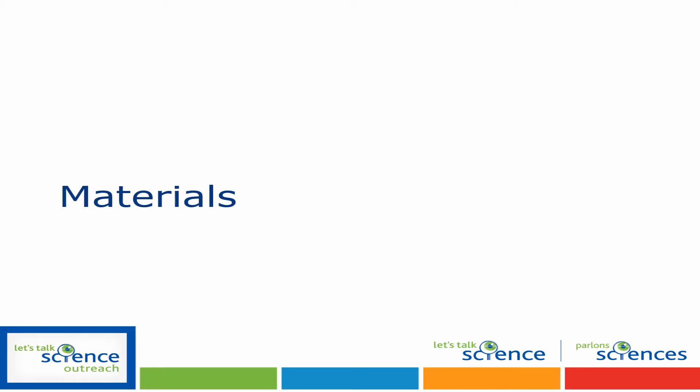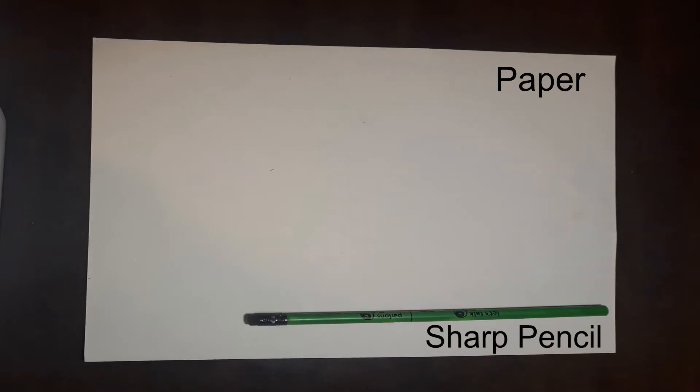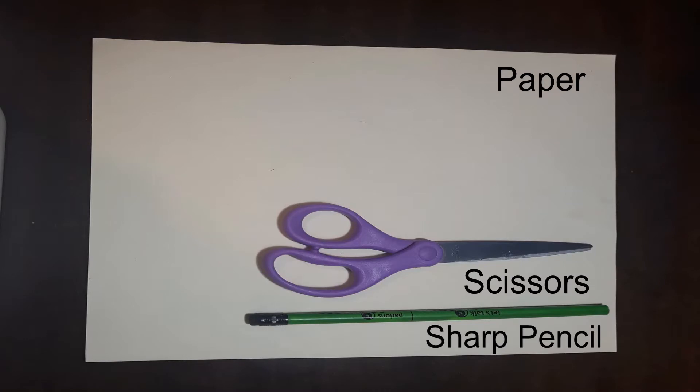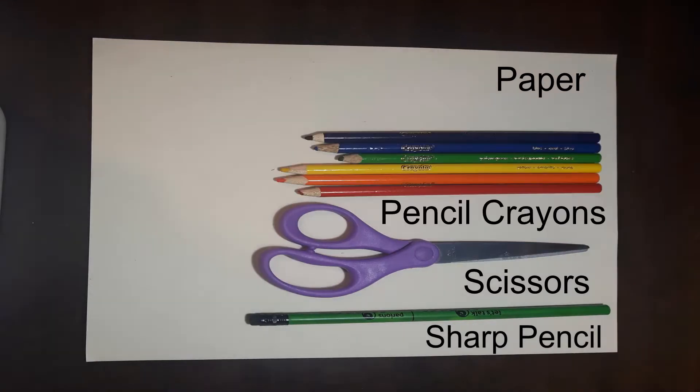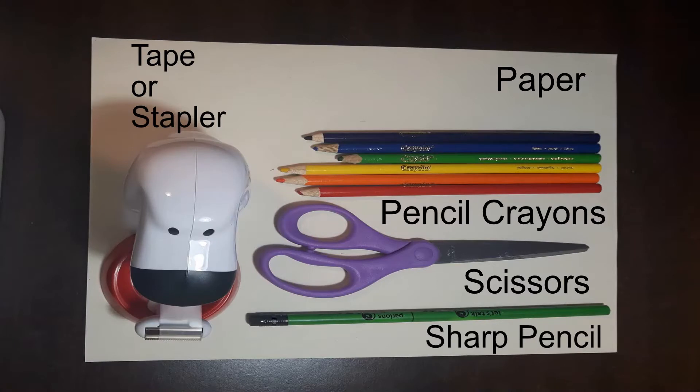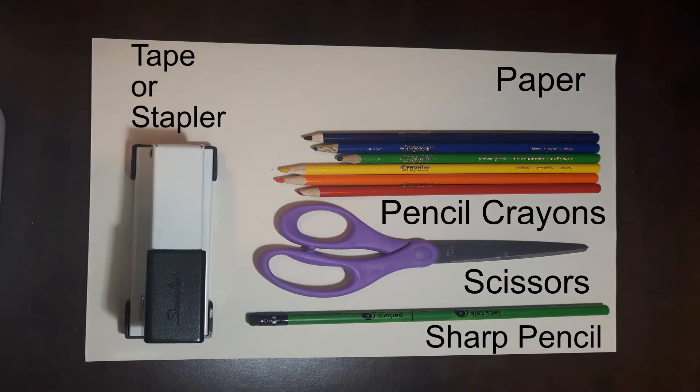So here are some of the materials that you will need for today's experiment. You'll need a sheet of printer paper, preferably in white. If you can't get white, you can use a very light color. You will want a pencil and eraser, and preferably you'll want a sharpened pencil. You'll also need a pair of scissors, some pencil crayons, and then you will want to use either tape or a stapler to create your hand spinner.